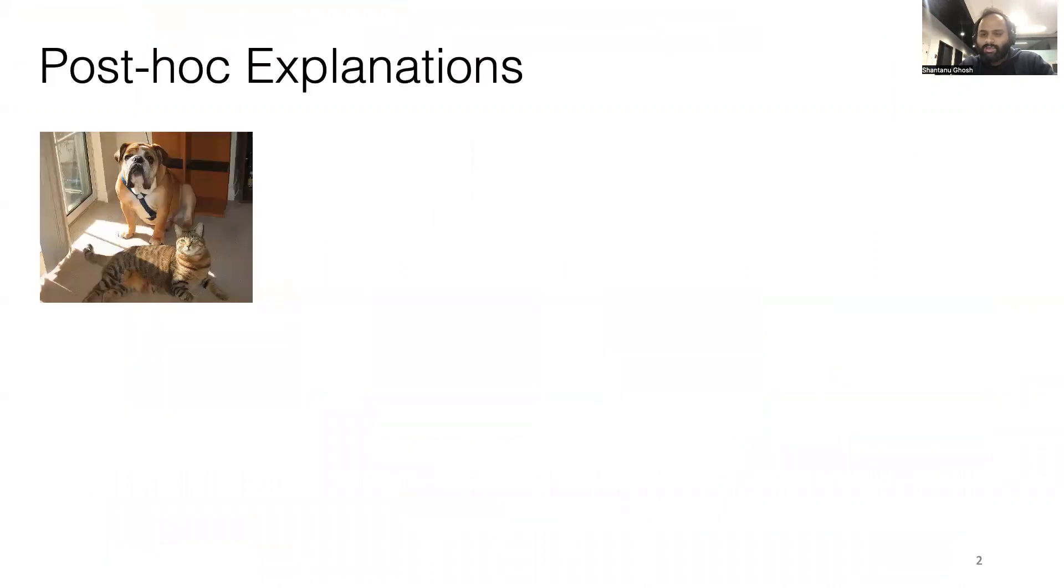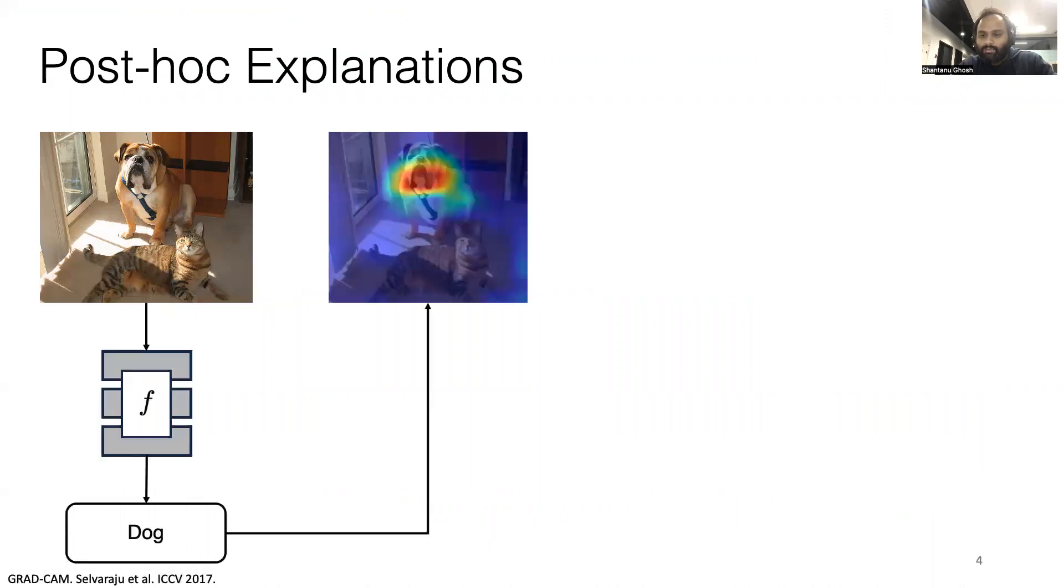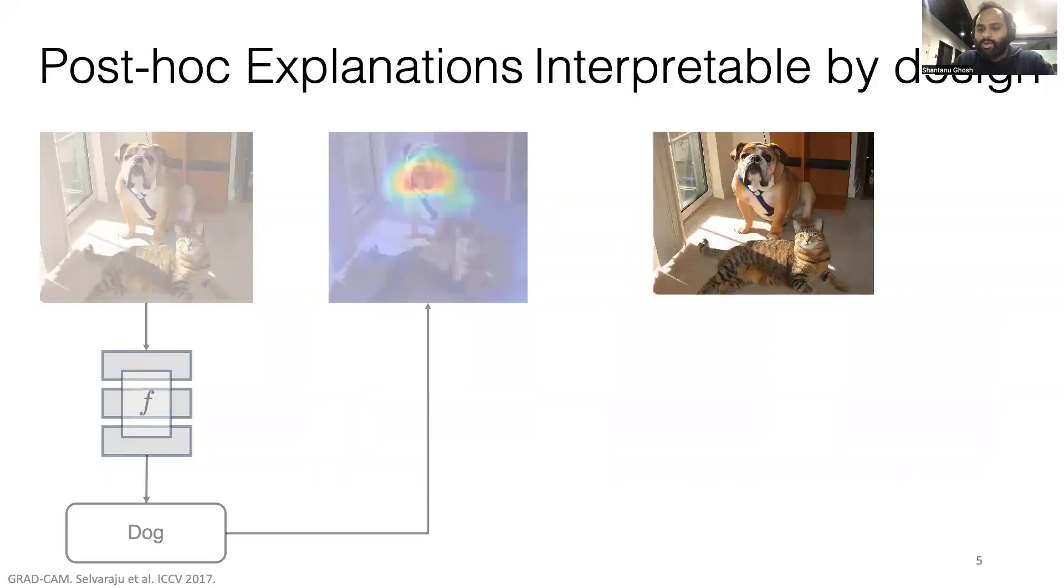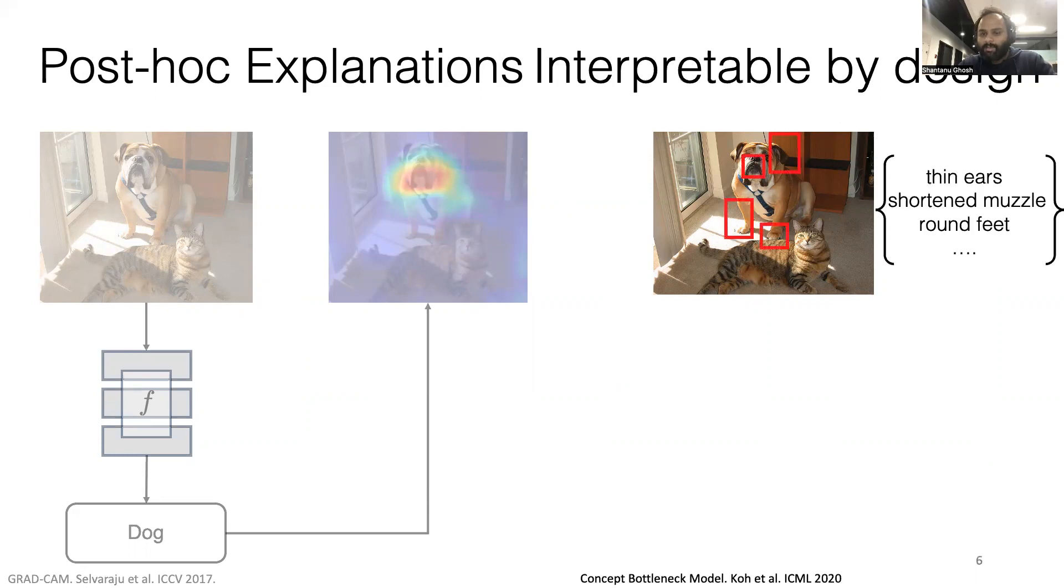Deep learning model design is dichotomous. Either we create a black box and explain it post-hoc, or we go for the interpretable by design models, for example, concept bottleneck models.